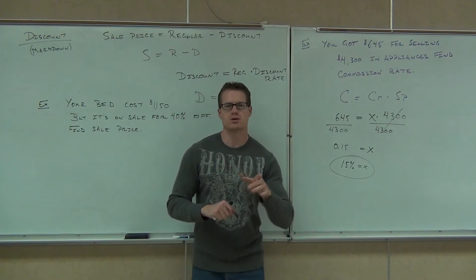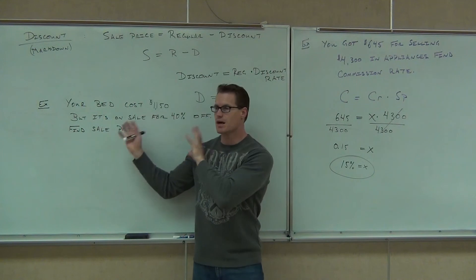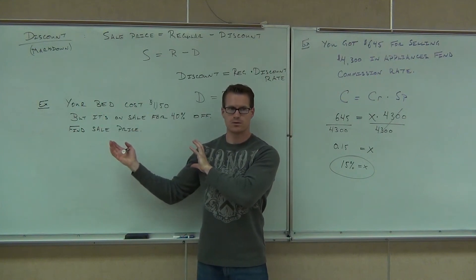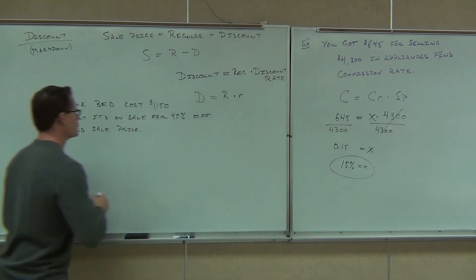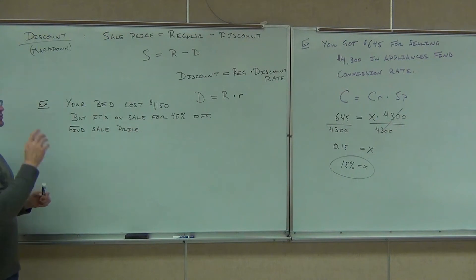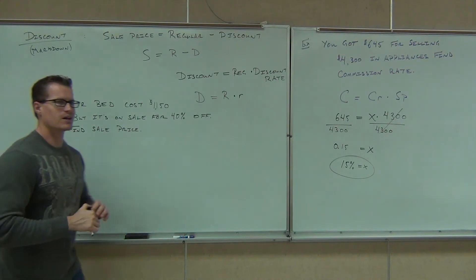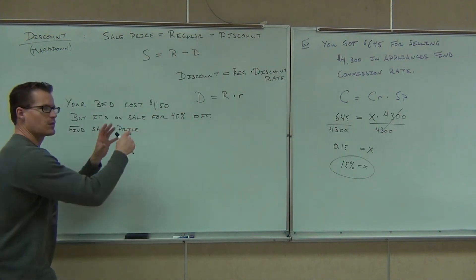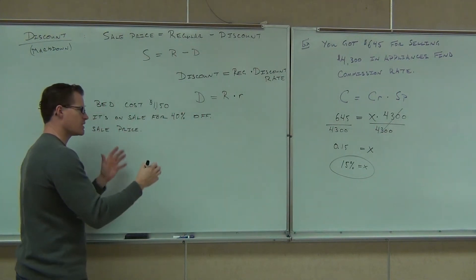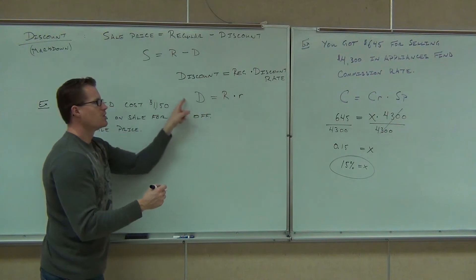So we're going to find out right now how to figure out what that's going to be. Now, if you really do think back to a couple of sections ago, we've actually done these problems before. We've done these problems before. We've just did them with proportions. So this is a different way to look at it. It's just a little different way. So your bed costs $1,150, but it's on sale for 40% off. Let's find the sale price. First thing we've got to figure out is how much the discount actually is. So what is the amount that you're saving?